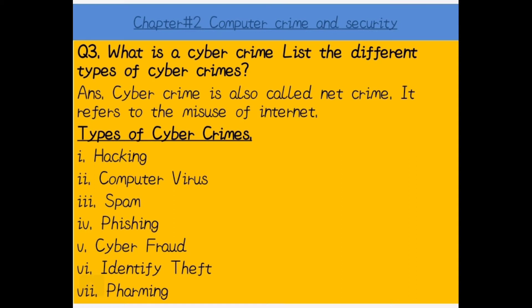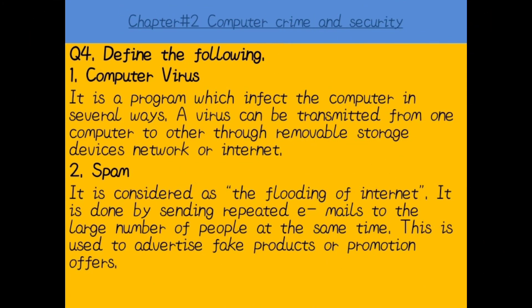Cyber crime کی مختلف مثالیں ہیں: fake products کی sale-purchase کی جاتی ہے، لوگ fake IDs بنا کے دوسروں کو blackmail کرتے ہیں، اور fake selling and purchasing of assets جیسے جائداد وغیرہ بھی ہوتی ہے — یہ تمام cyber crime کا حصہ ہے۔ Cyber crime کے rules بھی بنے ہوئے ہیں اور مرتکب کو سزا دی جاتی ہے۔ Different types of cyber crime: hacking, computer virus, spam, phishing, cyber fraud, identity theft, and pharming.